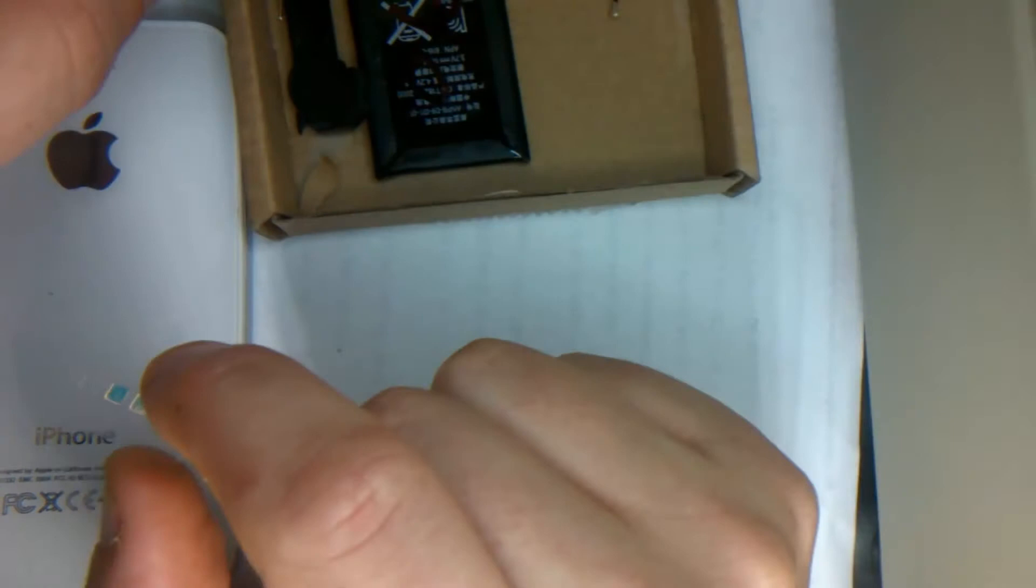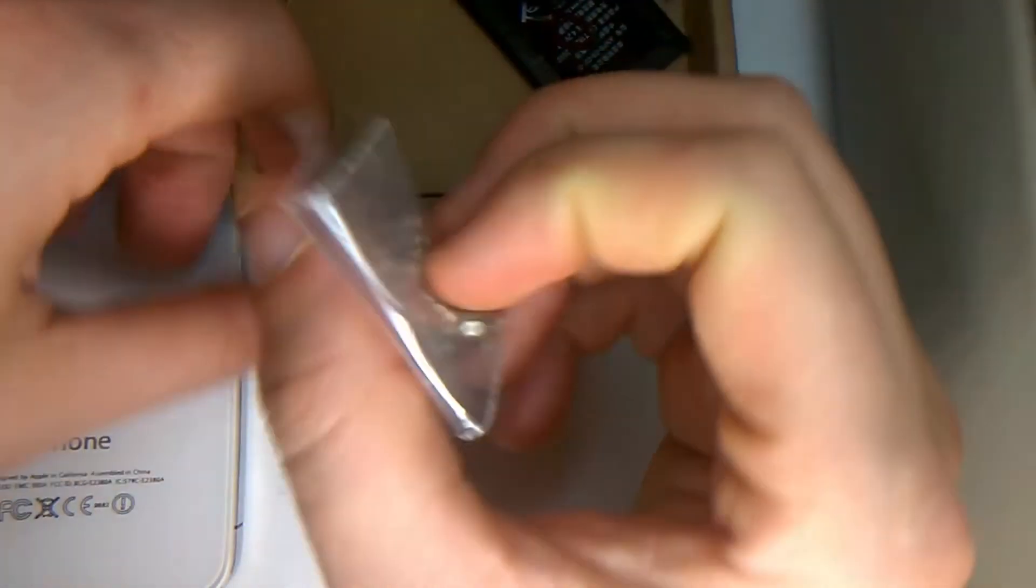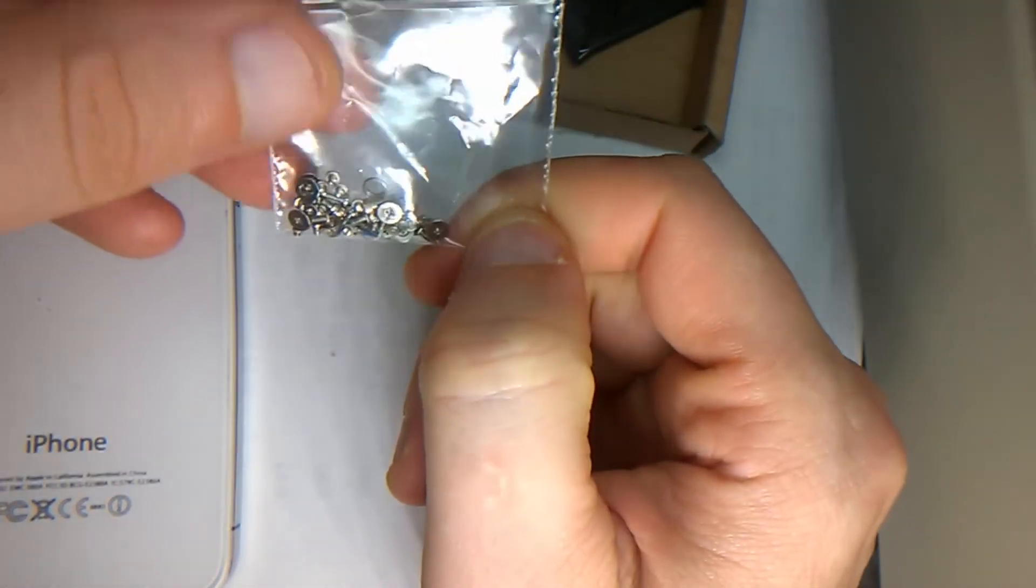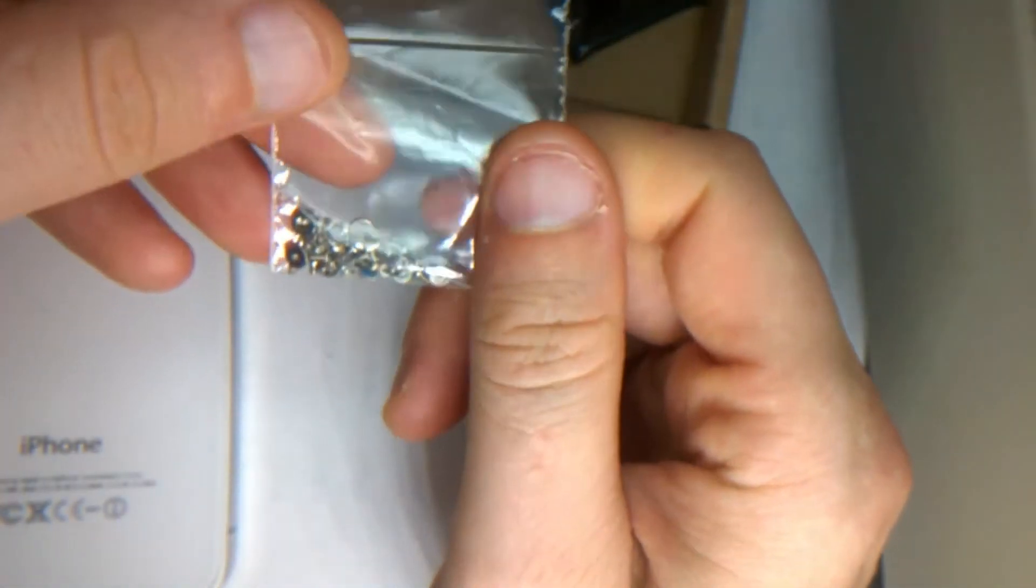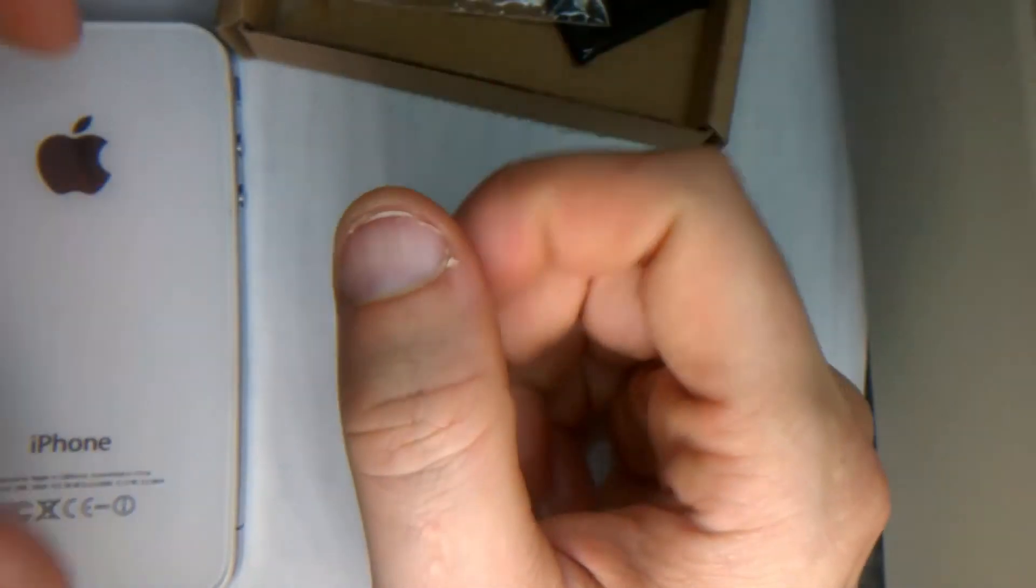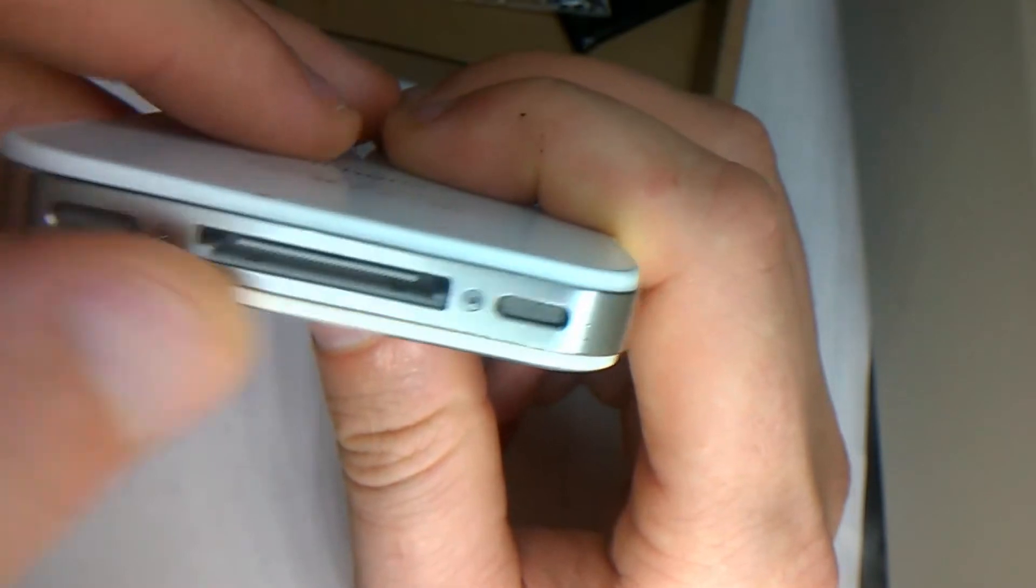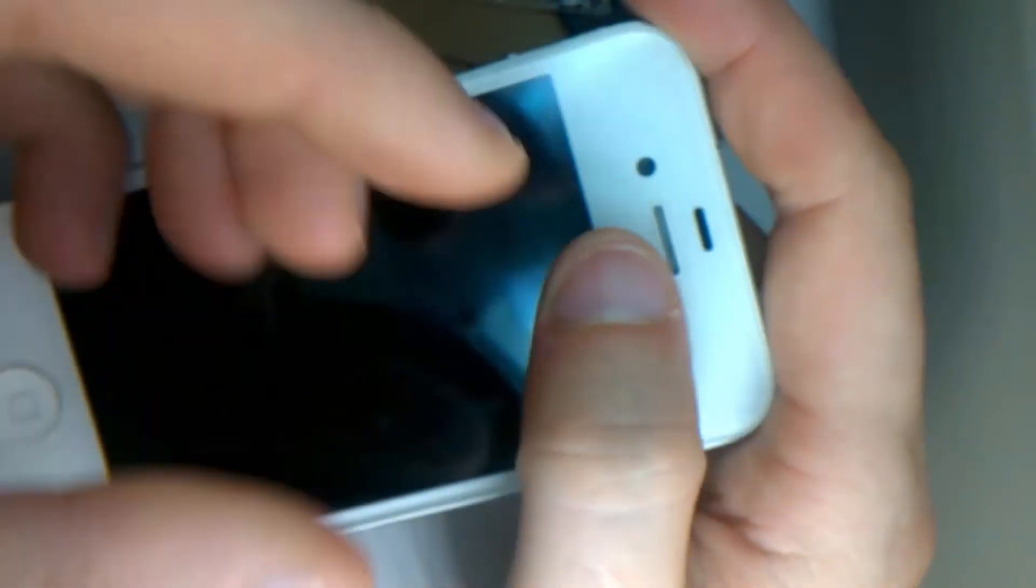Also you can get a pack of full screws, these were a pound off eBay, free postage. Because if you're like me and you've taken your phone to bits a few times, your screws are gonna get pretty worn out.